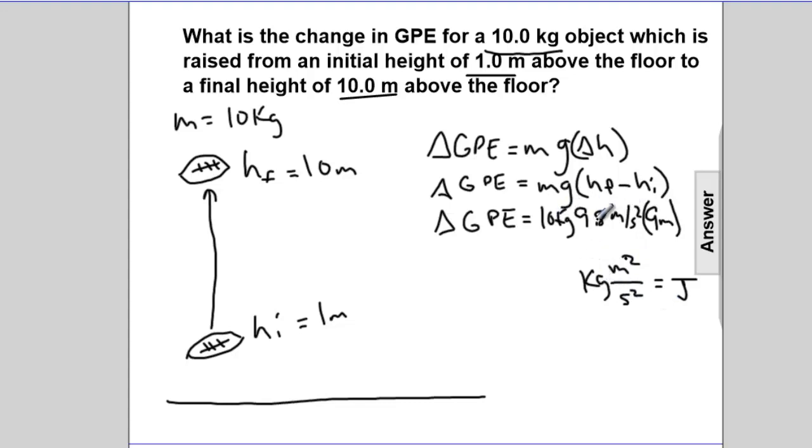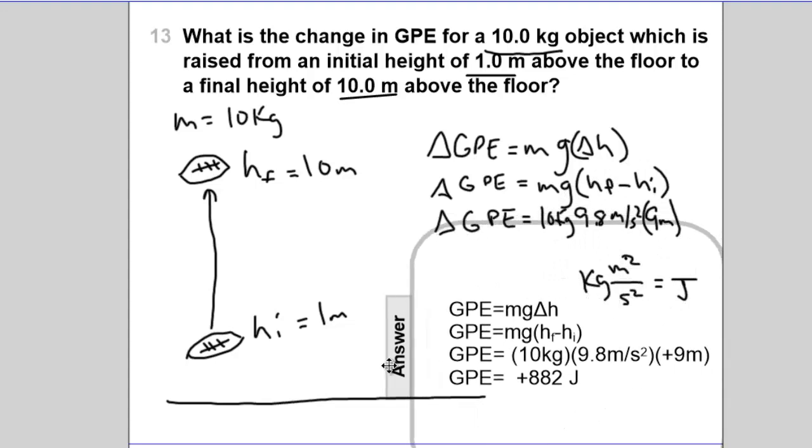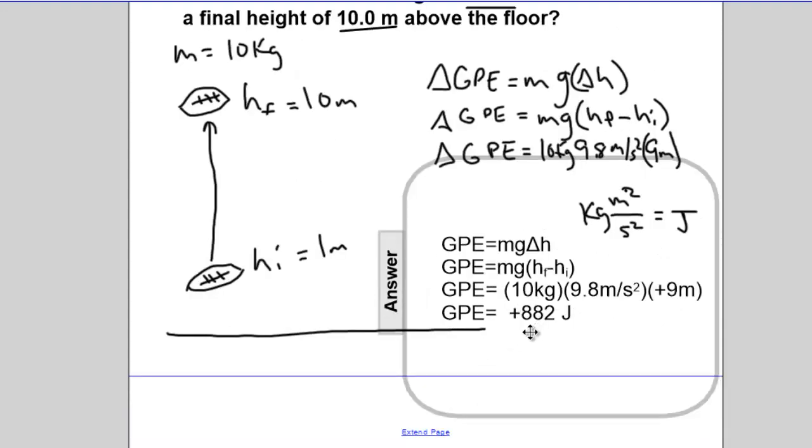So 10 times 9.8 times 9 is the answer, and the units are joules, and we can reveal the tab, 10 times 9.8 times 9 is 882 joules.